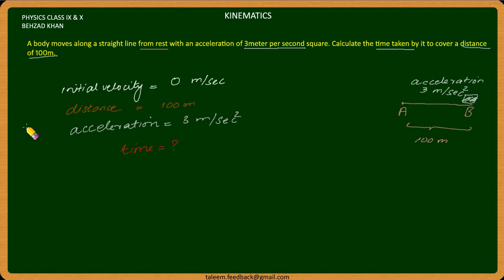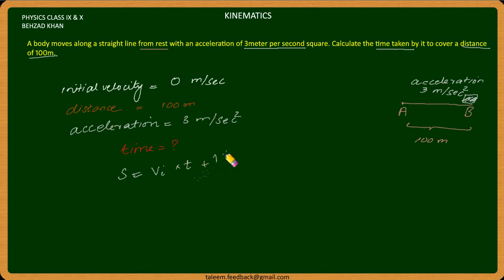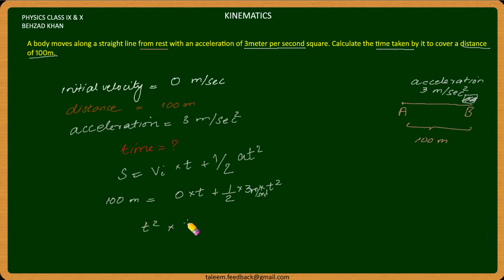So what we have is velocity, distance, acceleration, and time. Using the equation of motion from our previous lectures — the relationship we can use here is: s = ut + ½at². We substitute the values: distance is 100 meters, so this becomes ½ × 3 × t² equals 100 meters.